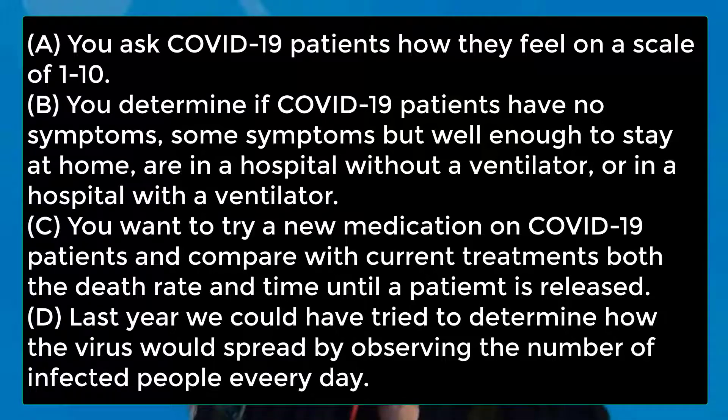Last year, we could have tried to determine how the virus would spread by observing the number of infected people every day. Each of these four statements should sound like something you understand and know why we care about. But each of these four statements also has two things that you should be able to classify: a type of study and a type of data. At the end of the chapter, I will reveal the answers to those things.